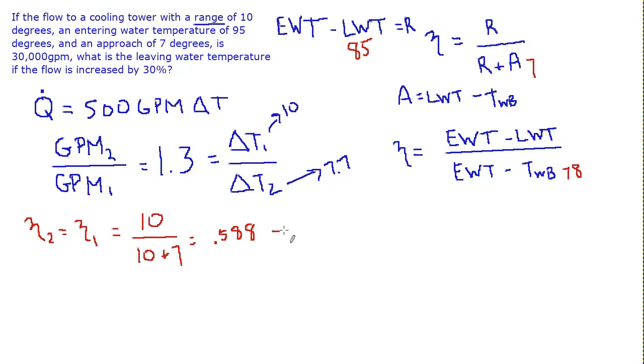Now applying that for efficiency 2, we know the new range is 7.7. And the denominator then is 7.7 plus the new approach. Let's call it A2, and we can solve for that. I trust you can do the algebra. You'll discover that A2 equals 5.4.